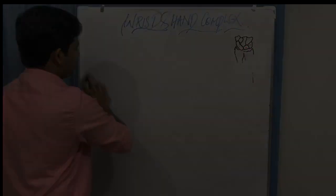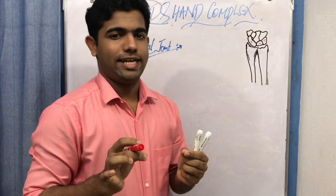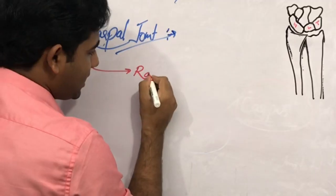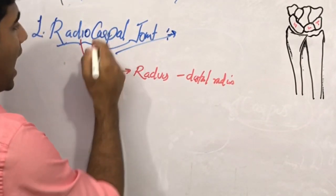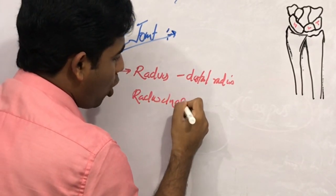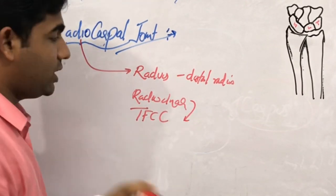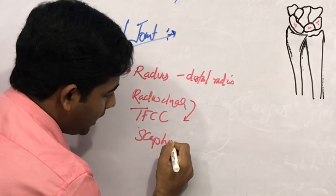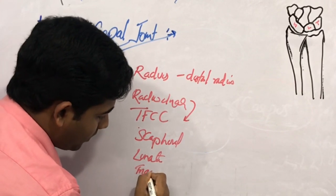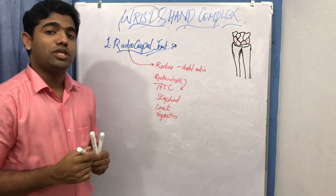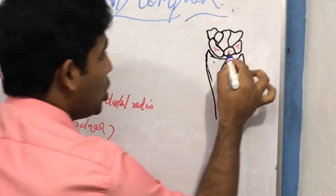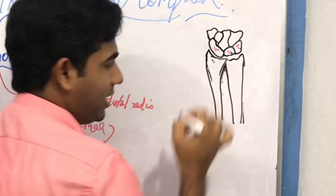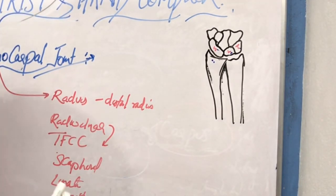The radiocarpal joint is made up of the articulation of the distal end of the radius. You may ask — what about the ulna? We will discuss that later. It also involves the radio-ulnar disc, which is part of the triangular fibrocartilage complex, and finally the carpal bones: the scaphoid, the lunate, and the triquetrum. These are the articulations seen in the radiocarpal joint.